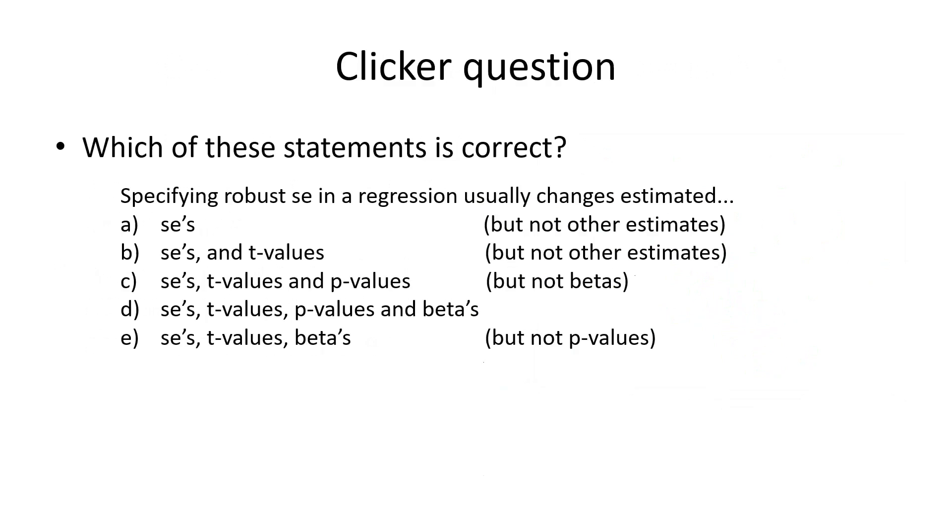So here's a question for you: Which of these statements is correct? What changes when you specify robust in regression? And you can answer that directly. You can also look at the outputs and compare them and get the answer from there. That ends this segment.